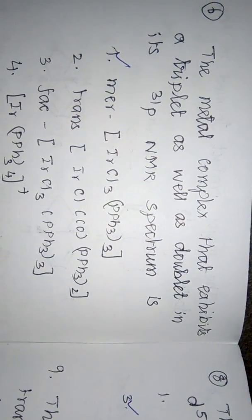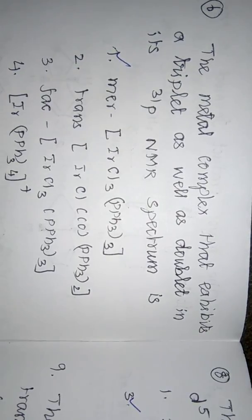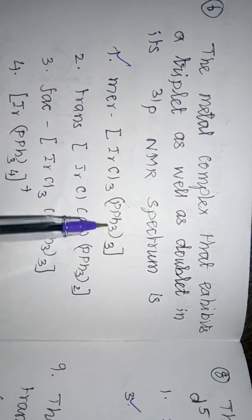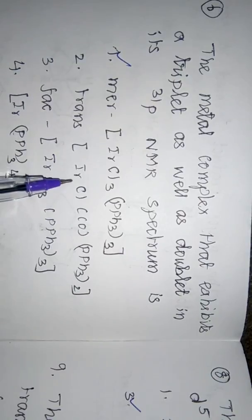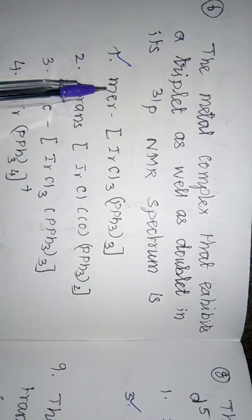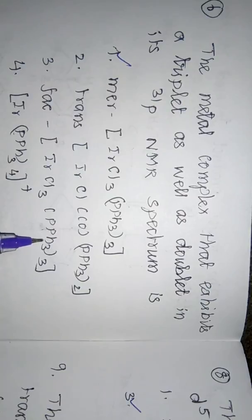The next question asks which metal complex exhibits both a triplet and a doublet in the 31P NMR spectrum. Four complexes are given: meridional IrCl3(PPh3)3, trans-Ir(Cl)(CO)(PPh3)2, facial IrCl3(PPh3)3, and [Ir(PPh3)4]+, which is a square planar complex.